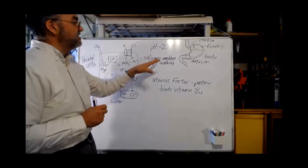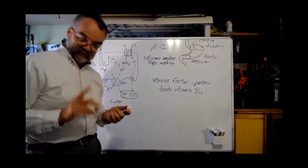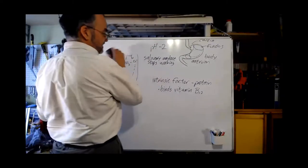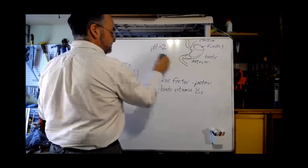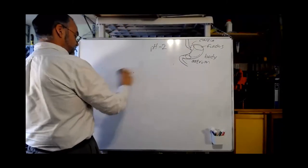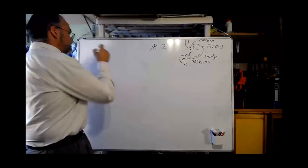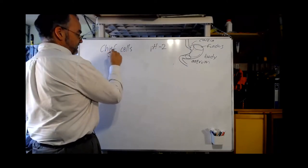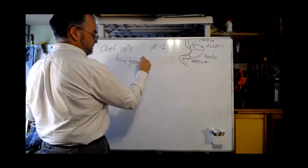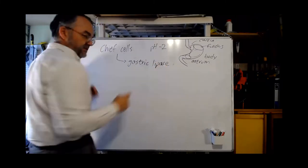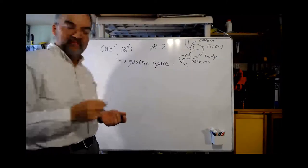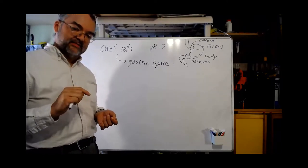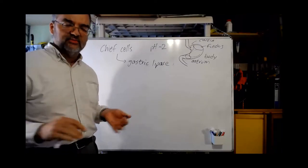So, the parietal cells produce acid and intrinsic factor, they don't produce vitamin B12. The chief cells produce those two enzymes. They produce gastric lipase, which along with the lingual lipase that's been activated by the acid, does some fat digestion. Not a lot. Most fat digestion actually does not occur in the stomach, most of it happens further on in the intestines. But a little bit happens here.